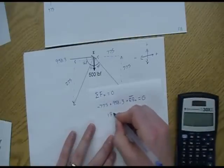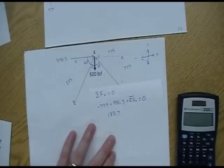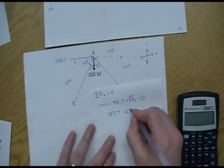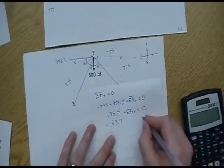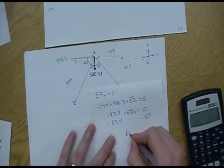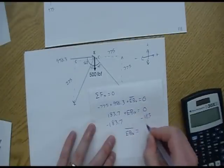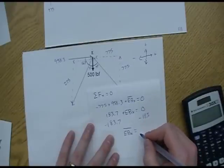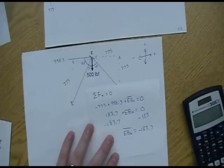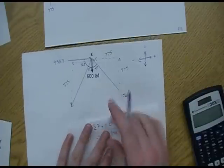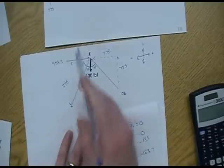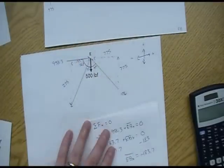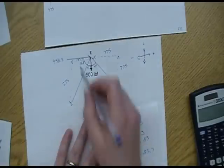So 183.7 plus EB in the X direction equals zero. Well, I'll subtract 183.7. EB in the X direction equals negative 183.7. So this is, it should be pointing to the left, and look, it is. We already knew it was going to be a negative number. Negative 183.7.